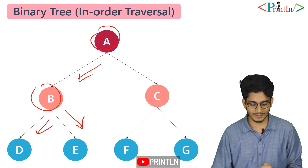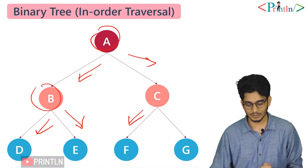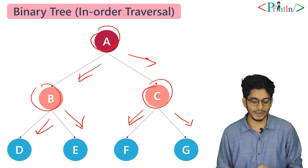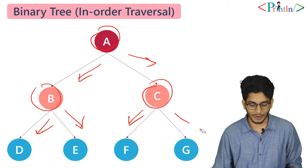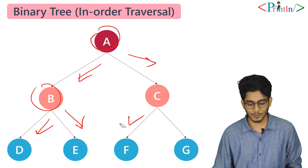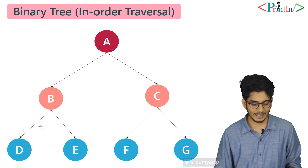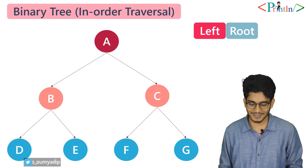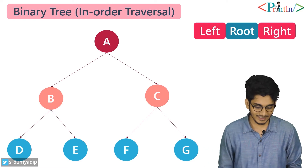Same goes for this. So it will be the flow — what will be the output and how we can perform the in-order? We will see that. At first we will go for the left, then root, then right.